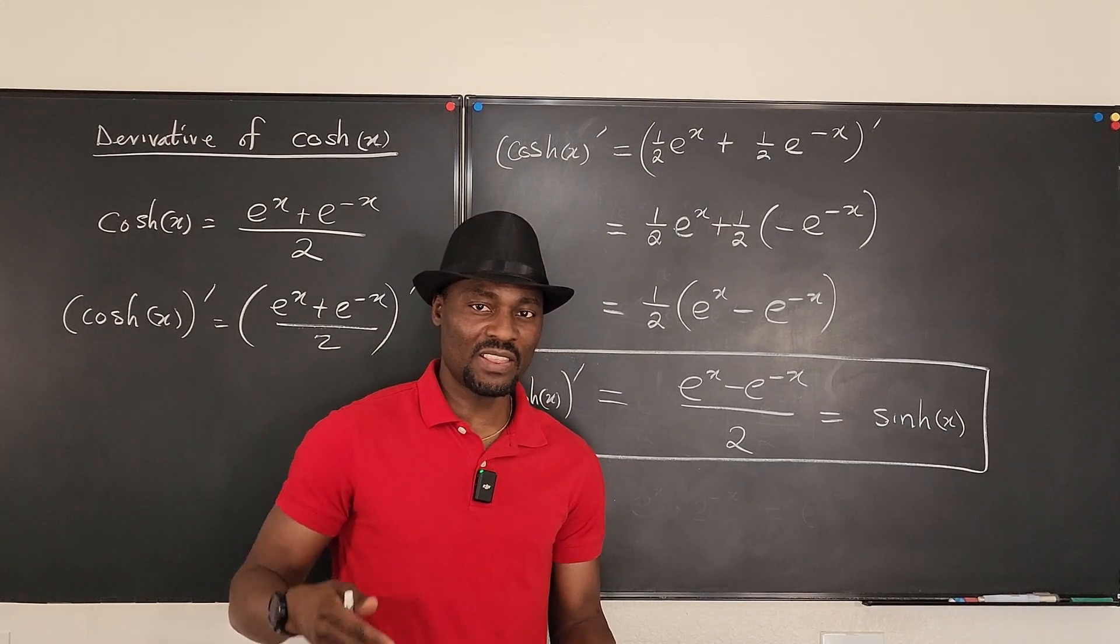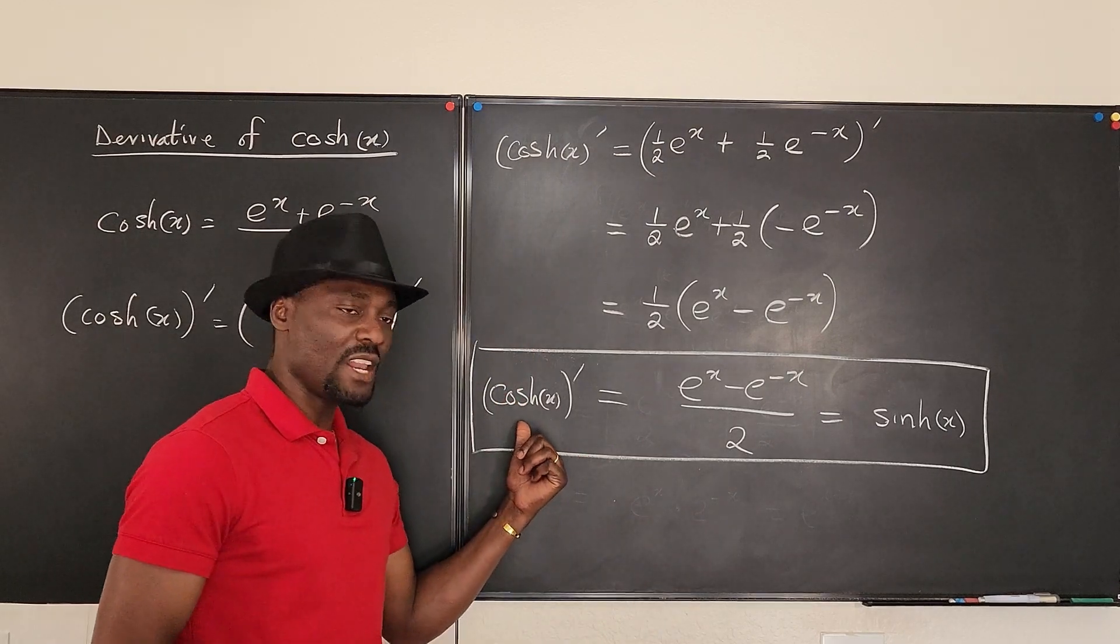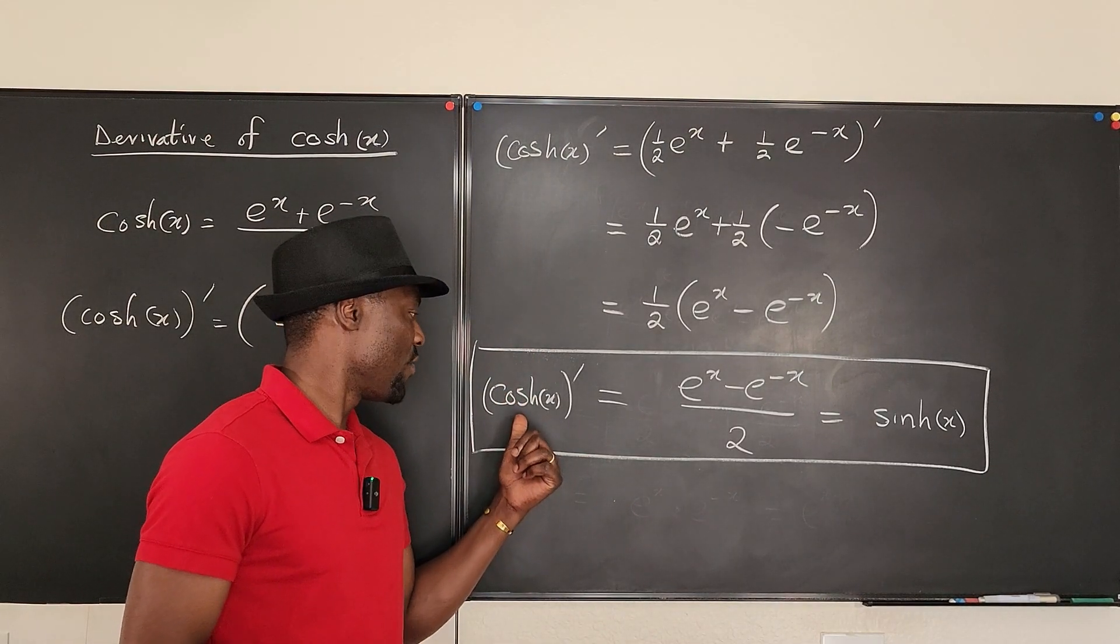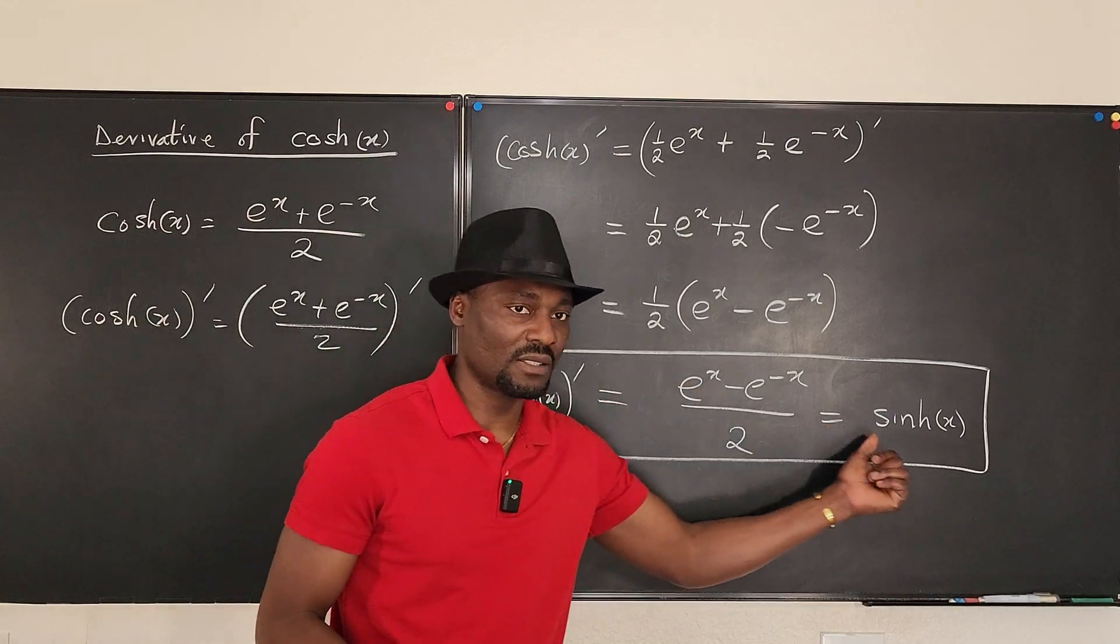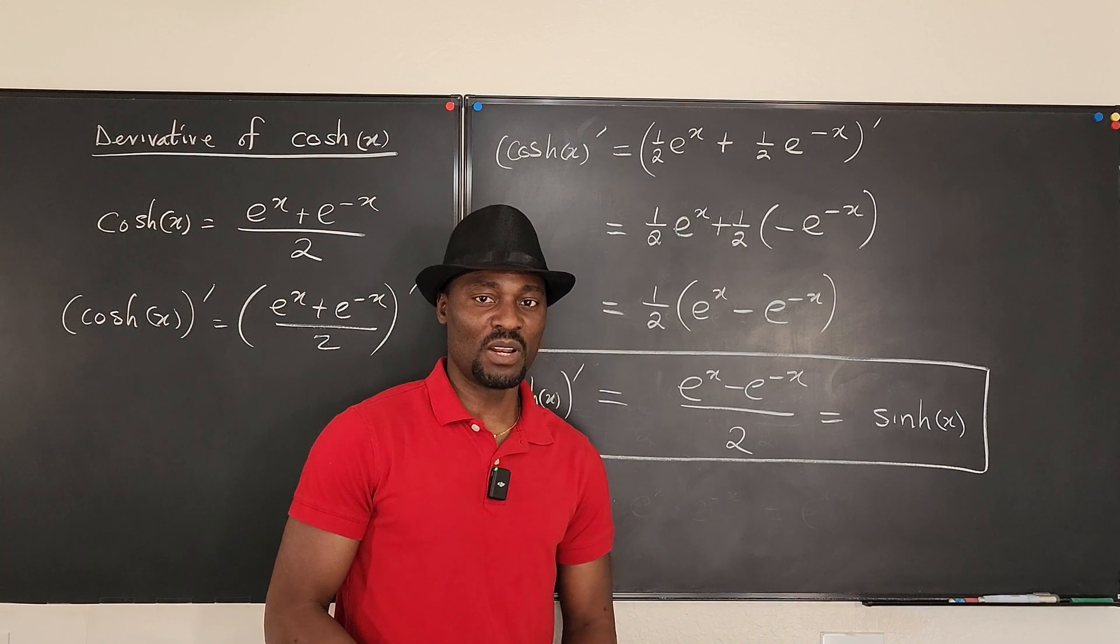So it looks like we don't get the minus sign in our differentiation. Remember that in regular trigonometry, when you differentiate cosine, you get minus sine. But when you differentiate cosh, you just get sinh.